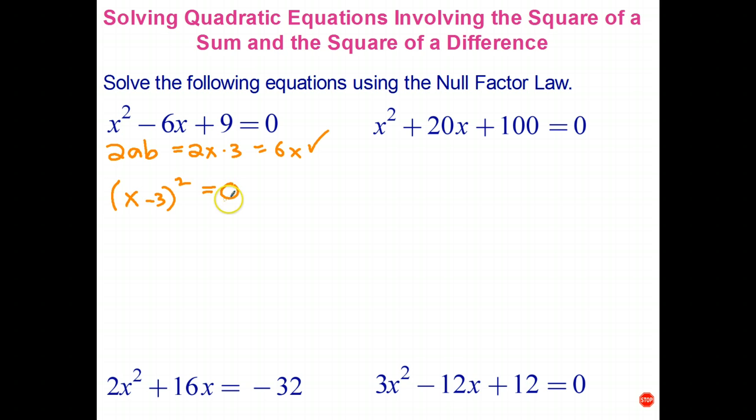Now this one's actually quite easy to solve because both of my factors are the same. So if x minus 3 is 0, it must be true. So if x minus 3 all squared is 0, it must be true that x minus 3 is 0. That's the only way that can be true. And therefore it turns out we only have one solution in this case.